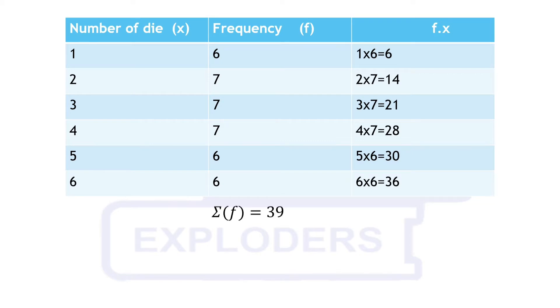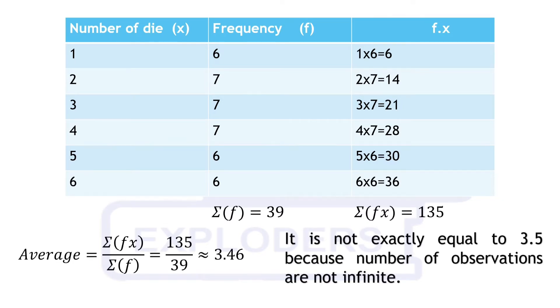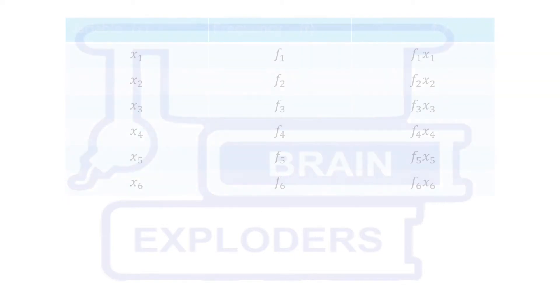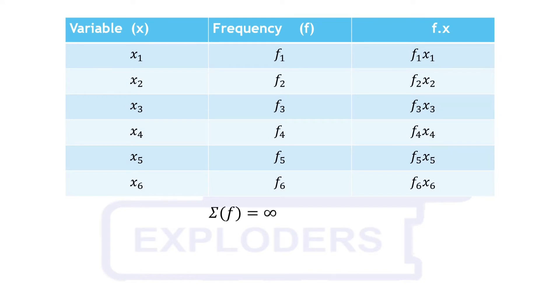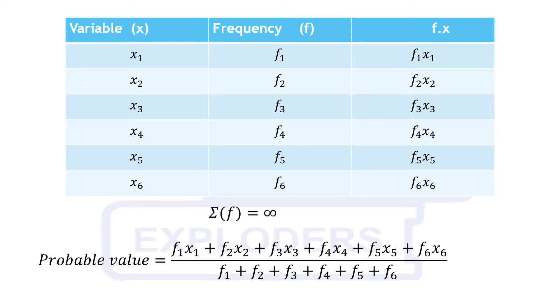Using the formula sigma fx over sigma f their average comes out to be 3.46. It is not exactly equal to 3.5 because number of observations are not infinite. As we increase the number of observations, their average gets closer to the probable value and average of infinite observations become equal to the probable value.